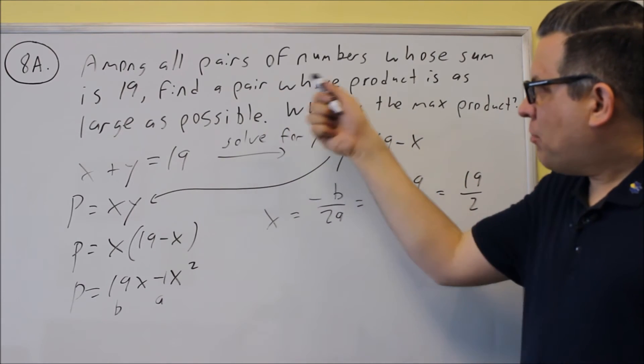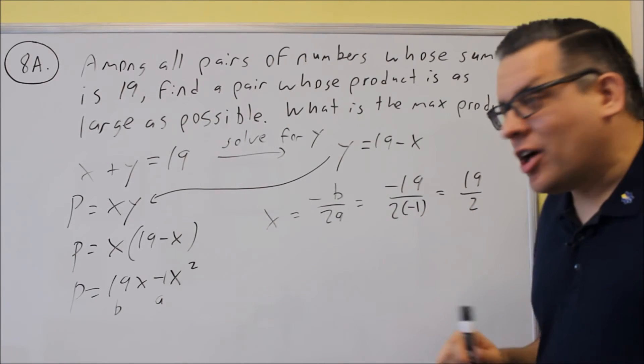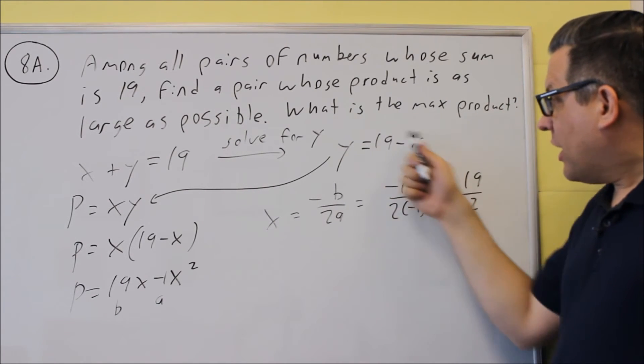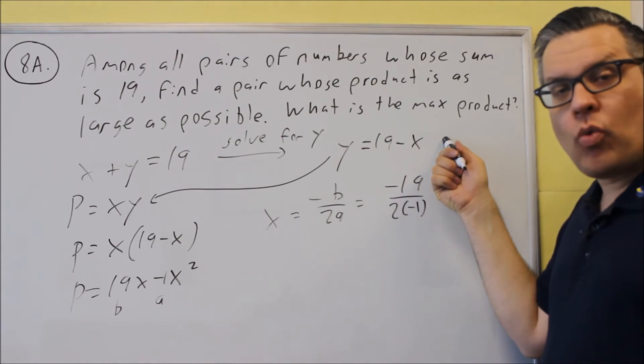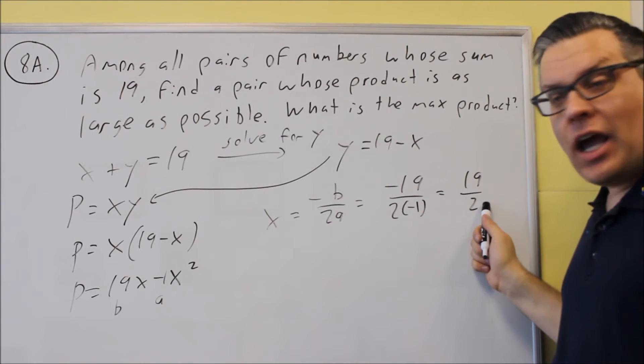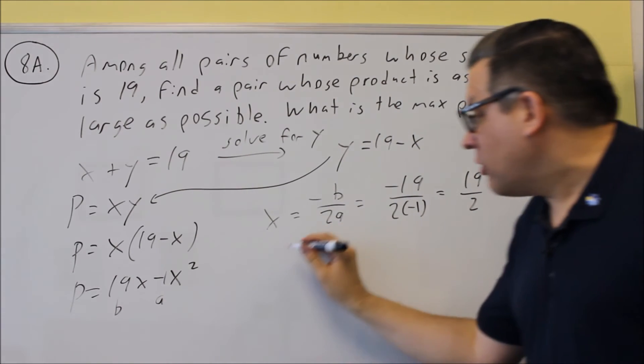Now it says find a pair of numbers. So pair means we've got to find the x and the y value. We've found the x value. Now this formula that we did earlier, this formula is solved for y. So if I take the 19 halves and put it in here for x, I'll get the y value. So I'll do that next.